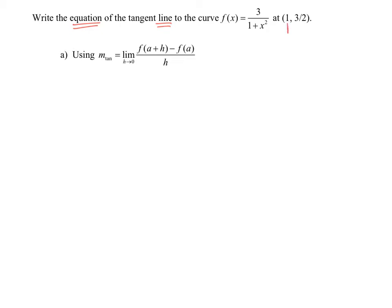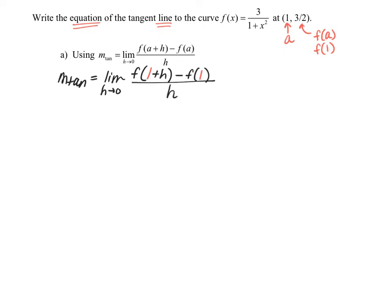The x-coordinate of the point where we want to find the slope is what we're labeling as a. Remember, the y-value is essentially f of a. In this case, our y-value is equivalent to f of 1. So let's go ahead and rewrite our limit statement, putting in the value of a. The limit as h approaches 0 of f(1 + h) minus f(1), all divided by h, is our initial setup.